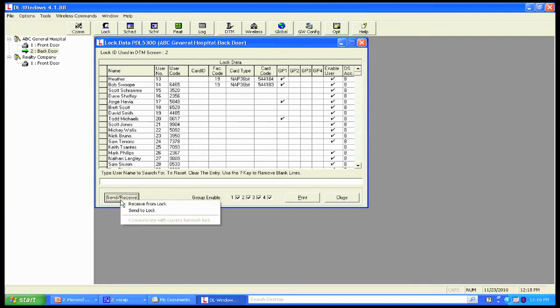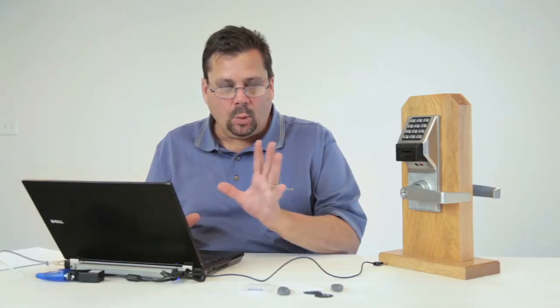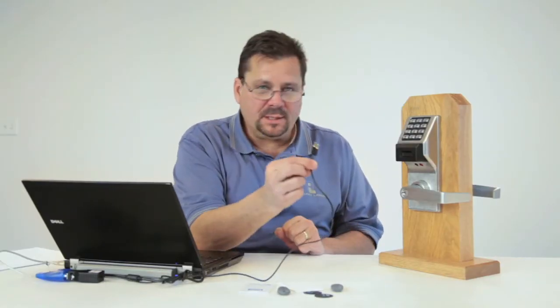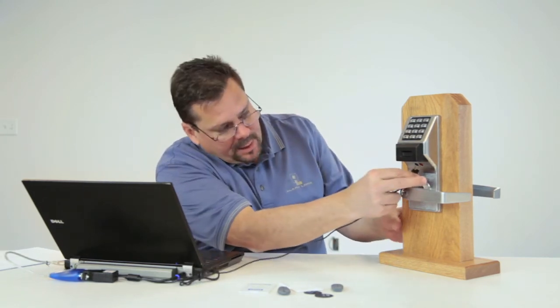First step is hit the send-receive button. I want to send to lock, and I'm going to get another pop-up here, and it's going to ask me what do I want to do. I can simply choose all, or I can choose one of these different functions where I just want to send users. I can just send users. I can just send the schedule, just the features, etc. On initial programming, what I want to be able to do is I want to send all. Once we get to this point here, we're going to plug the PCI cable in, and remember, it's polarized. The little tab here is black, so let's plug that in.